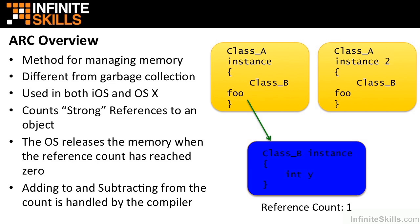Now let's say we instantiate class A instance 2, but we reuse the same class B instance and assign that to its internal variable, foo. So when that happens, now we've got the same instance of class B, yet now its reference count in the OS is 2. So now we have two strong references, and the iOS or macOS will not release the memory.